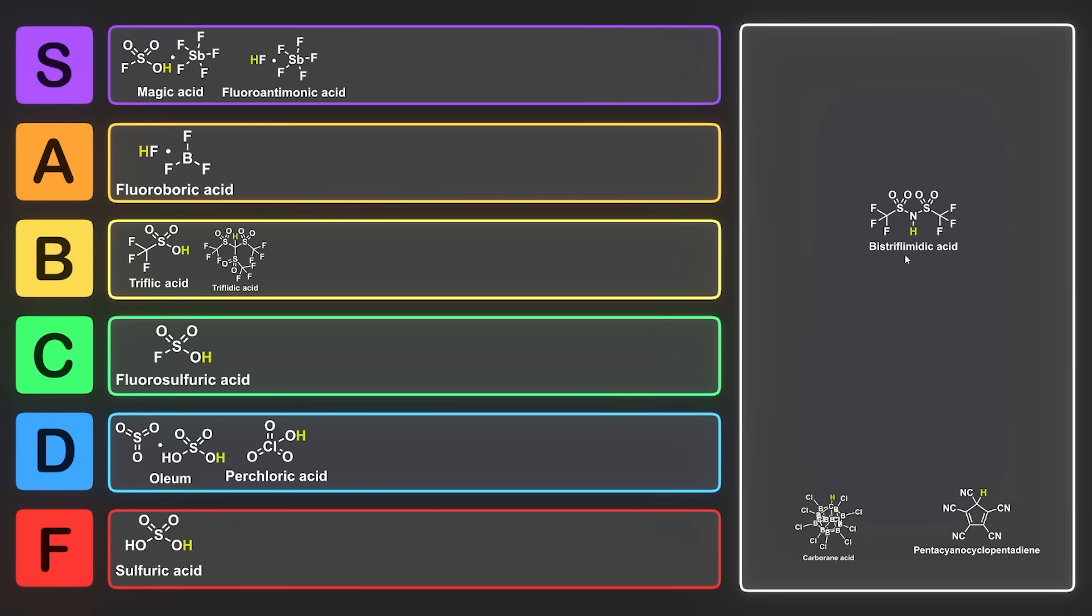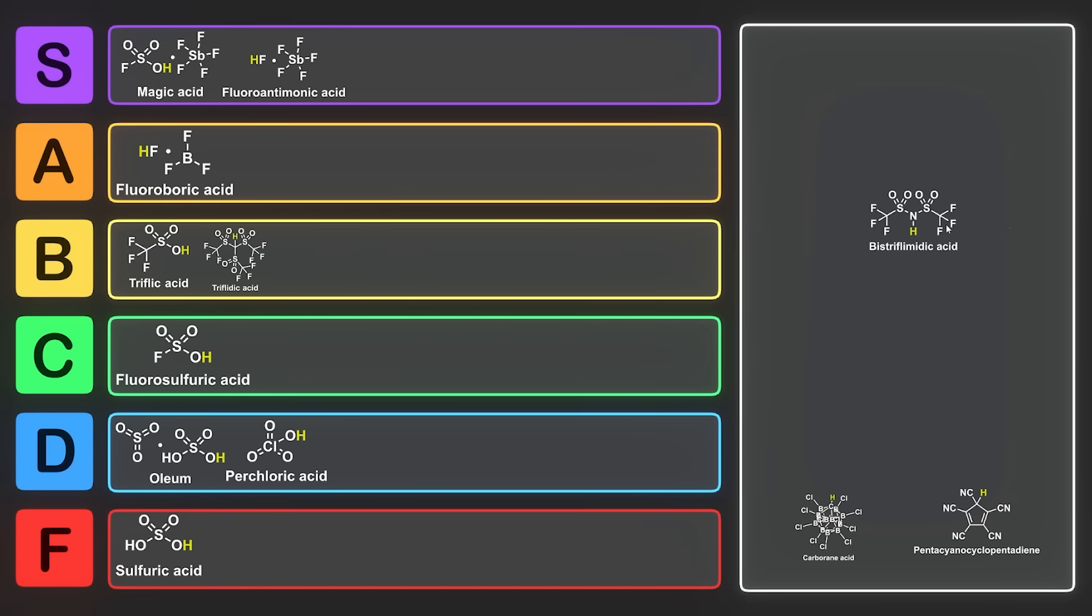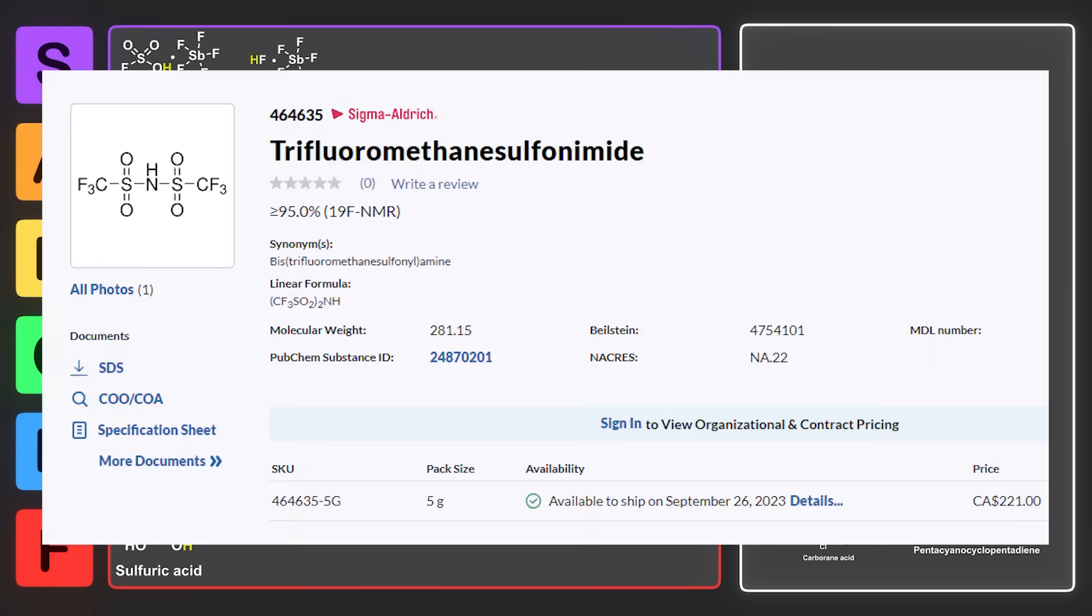The pKa of bistriflimidic acid is roughly minus 12, at least in dichloroethane, but in acetonitrile its pKa is close to zero. Different solvents have drastically different effects on pKas, so a really low pKa in one solvent doesn't mean that it'll be as low in another solvent, because it depends on a number of factors. So bistriflimidic acid, it's useful, but oftentimes you have to prepare this yourself. You can't just buy it always, at least for lab work. So for this reason, I think we'll put it into C tier. It could be commercially available to some people, but those people are forking out a lot of money for this stuff.